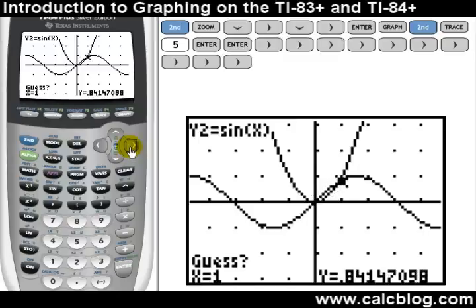The calculator tells us that this intersection occurs at an x-coordinate of about .877, and the value of the functions at this point is about .769.